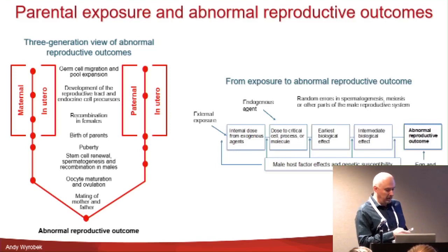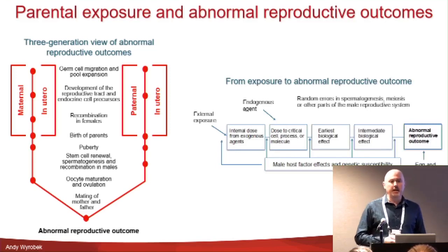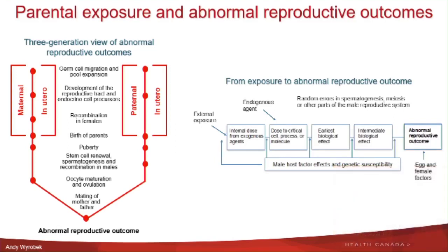When you start talking about how you get from an exposure to an abnormal reproductive outcome, there are multiple steps along the way. As was pointed out, you need to understand the external exposure, because if there is not an exposure, there is no risk. But it's also not sufficient to just understand the external exposure itself — you need to understand how much of that exposure actually reaches the target tissue, in this case the testis or the ovary.